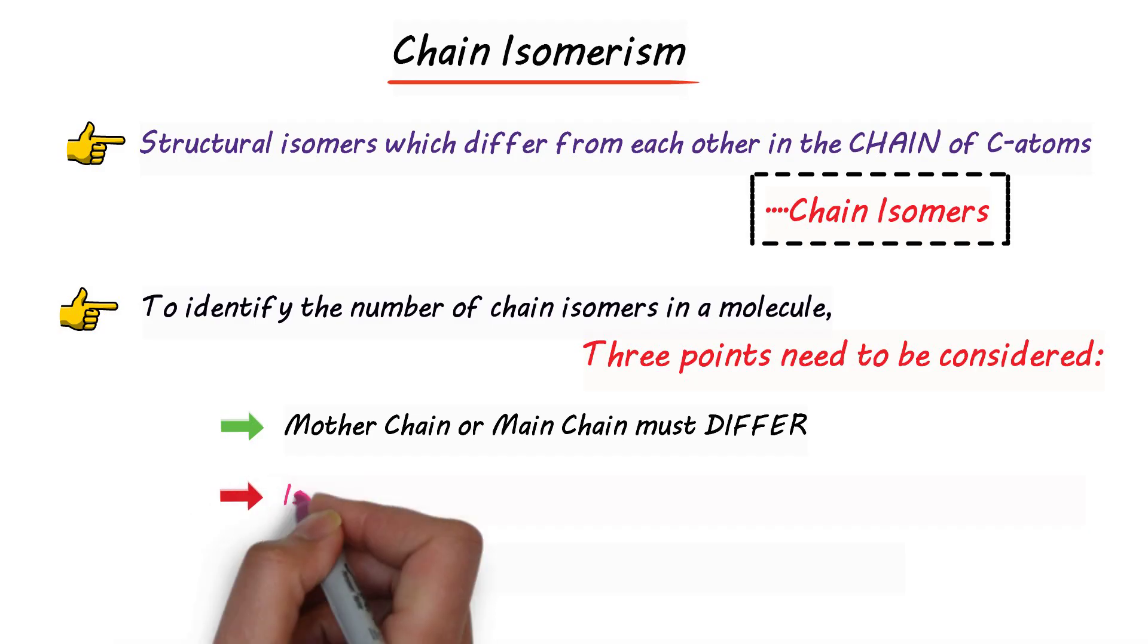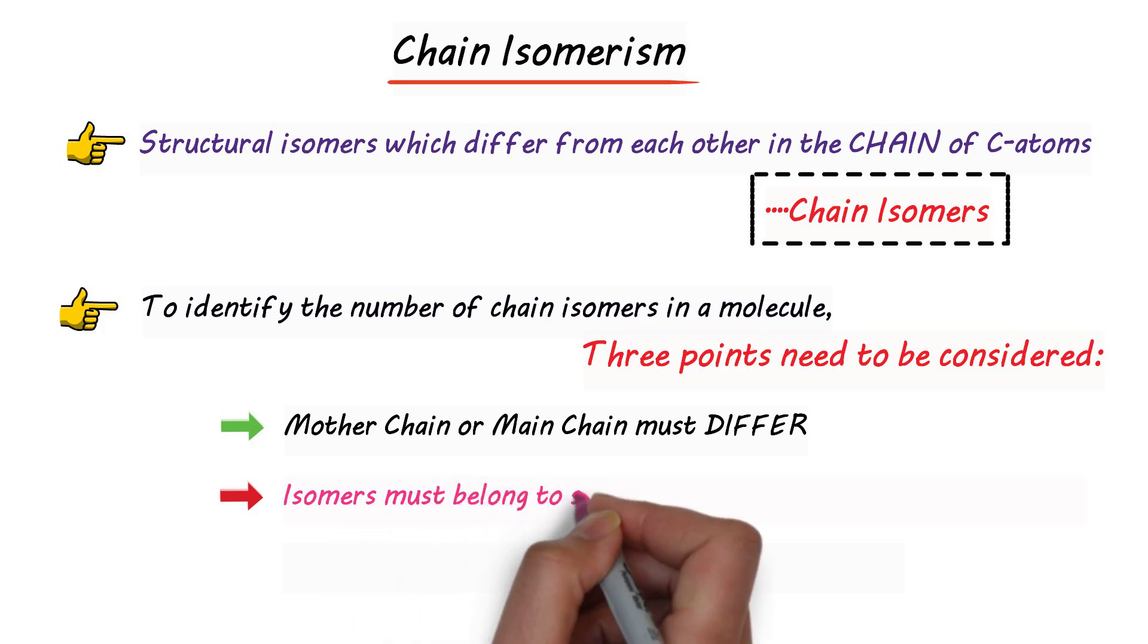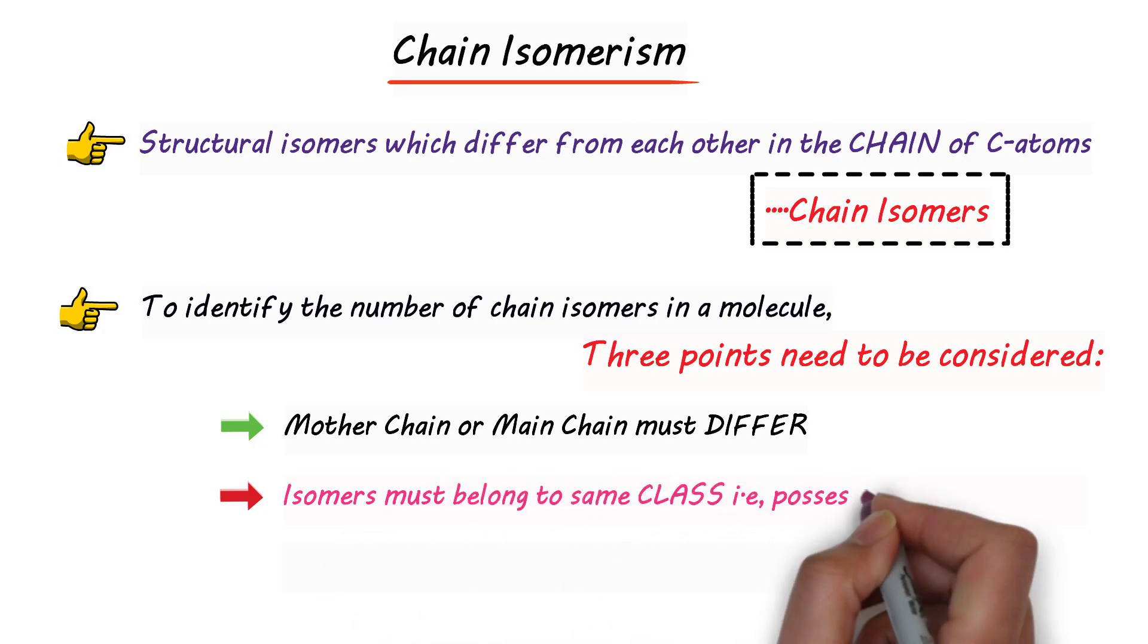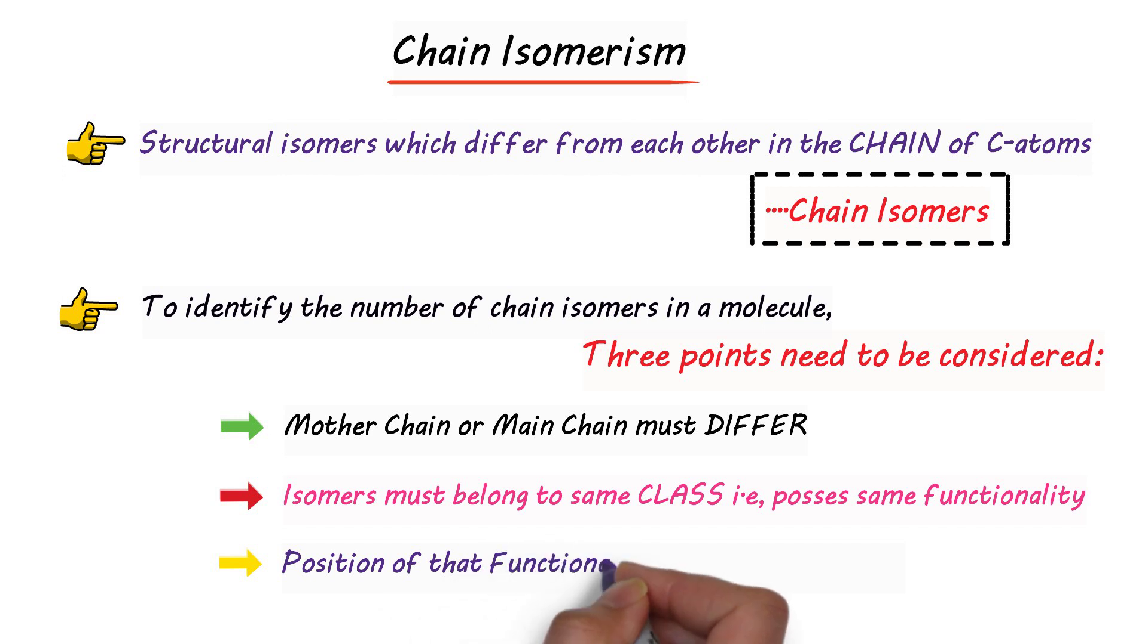And second condition is isomers must belong to same class, that is they must possess same functionality. So if one molecule belongs to alkane family the next molecule has to belong to alkane family. If they have same molecular formula then they could be chain isomers. And the third condition is position of that functionality must remain same. So these are the three conditions.